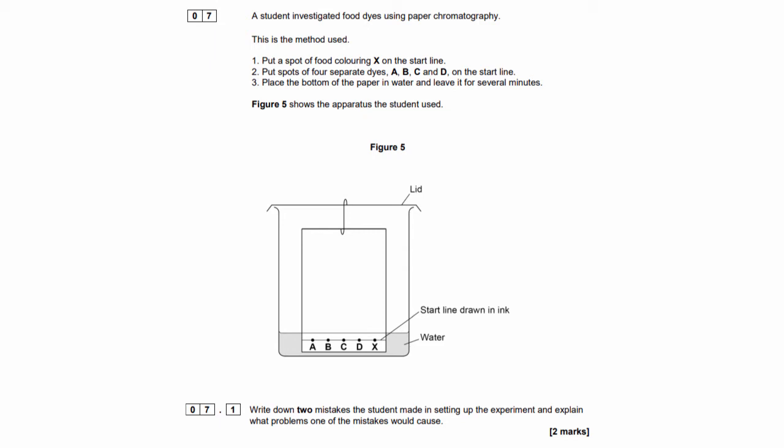Here's a past paper question to test your understanding. The student investigated food dyes using paper chromatography. This is the method used: Put a spot of food colouring on X on the start line. Put spots of four separate dyes A, B, C and D on the start line. Place the bottom of paper in the water and leave it for several minutes. Question one, write down two mistakes the student made in setting up the experiment and explain what problems one of the mistakes could cause.